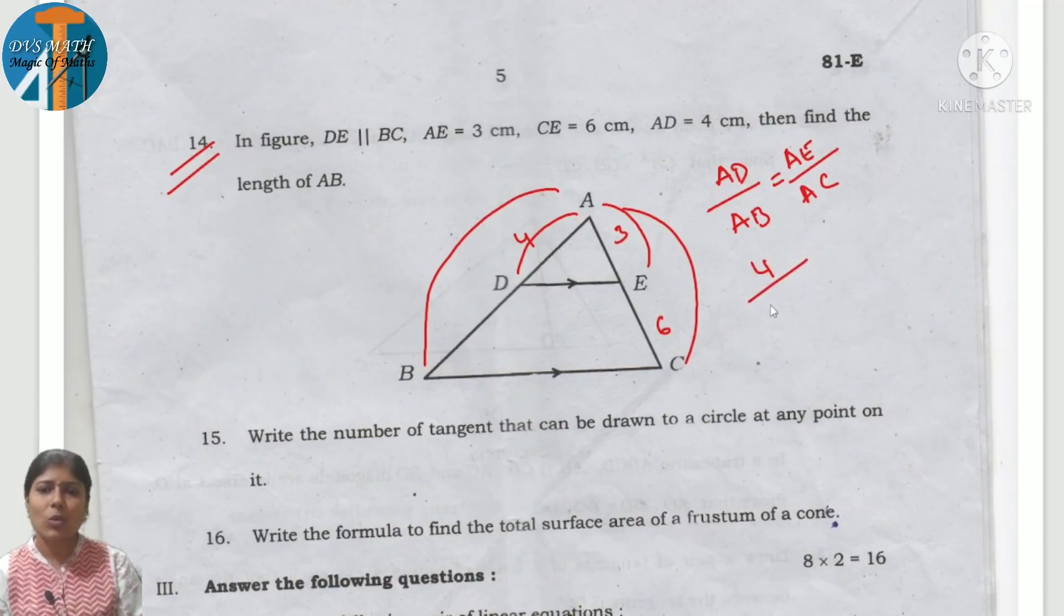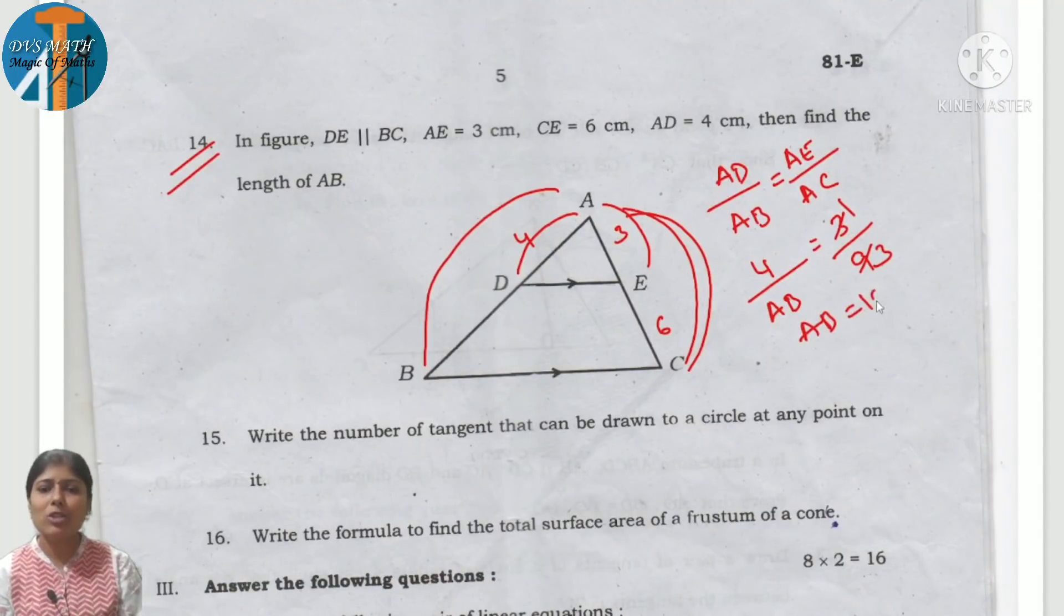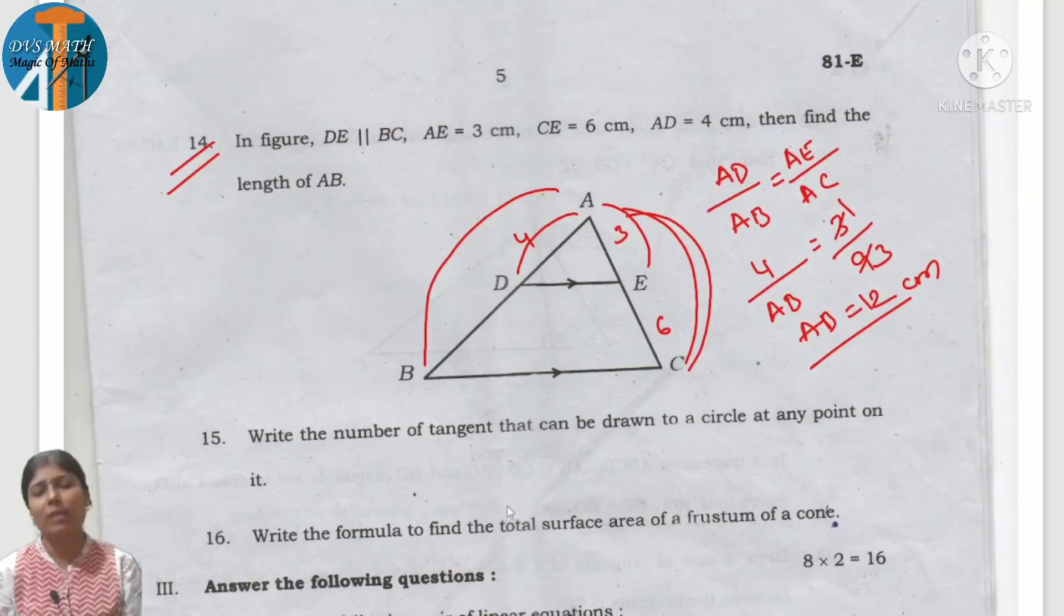So what is A, B? We don't know. What is A, E? A, E is 3. But it will observe, it will be complete and add. 3 plus 6 is 9. It will be 3 ones and 3 threes. Cross multiply and AB will be 12, 12 cm. This side you have to select BPT and Corollary of BPT.